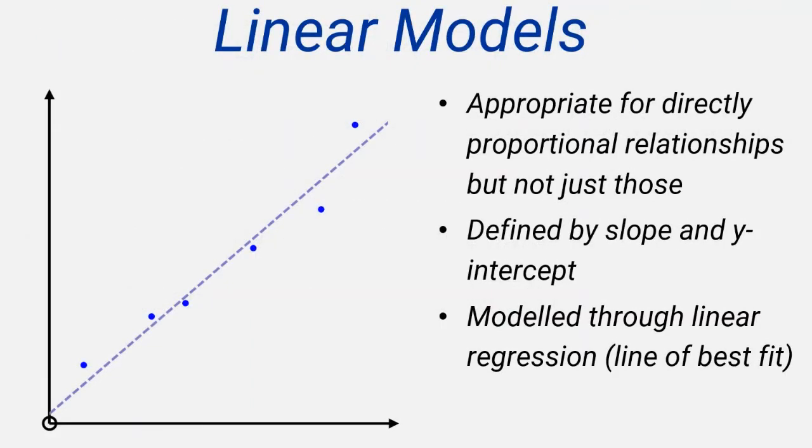One of the most common types of model, and arguably the most straightforward, is a linear model. This is when the data points can be modelled through a straight line. You'll perhaps know this as the line of best fit, although it's more correctly called the Y on X regression line.